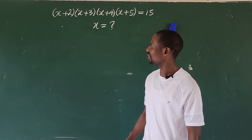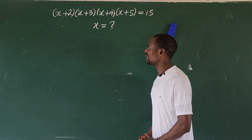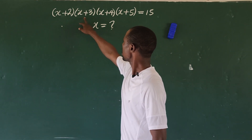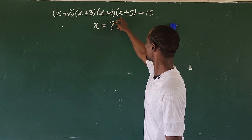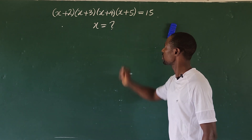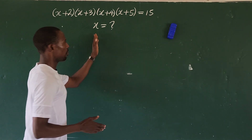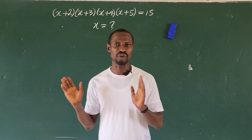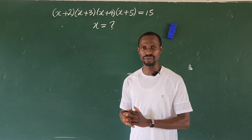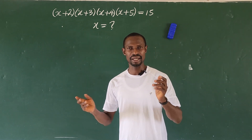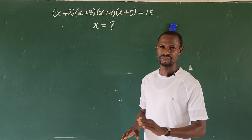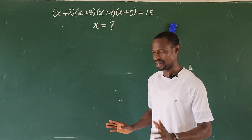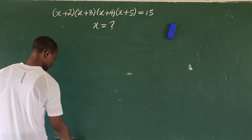Welcome to today's class. Today we have this math olympiad challenge. The question is: bracket (x+2) bracket (x+3) bracket (x+4) bracket (x+5) equals 15. What are the possible values of x? We'll solve for four roots — some may be imaginary while others may be real. We're going to solve for both the real and imaginary roots, so let's go straight to solving.